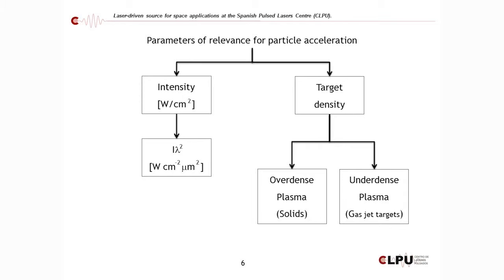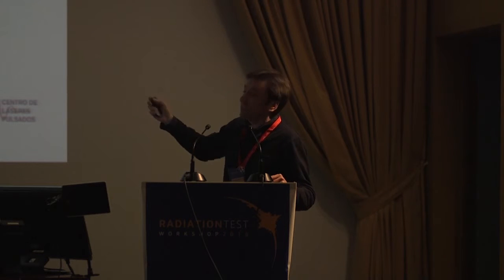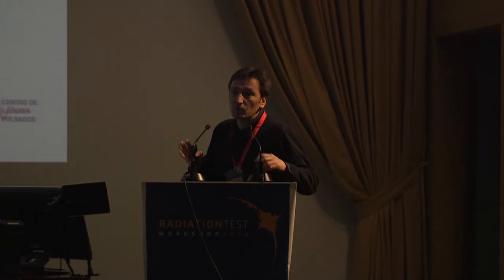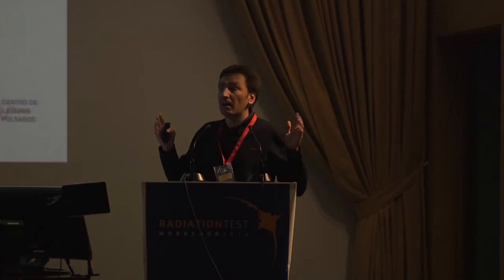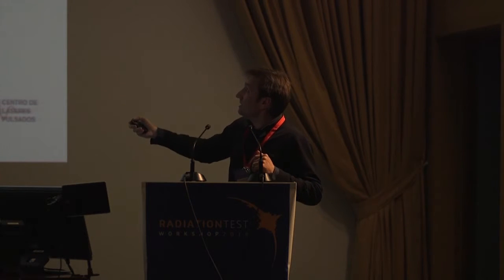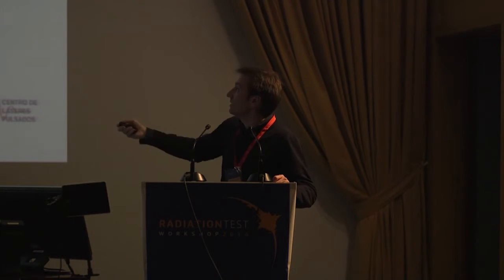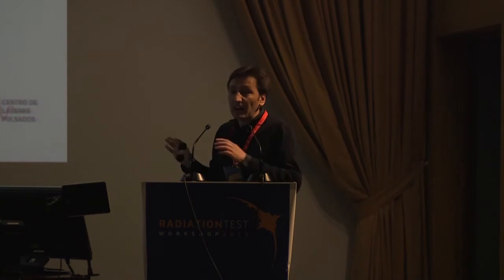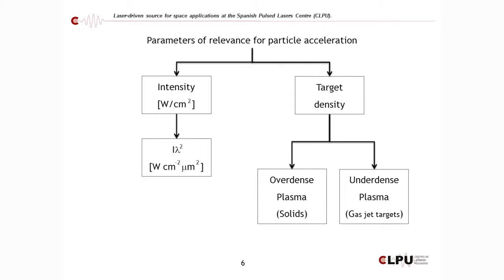The key parameters relevant for this acceleration: the first is the intensity of the laser, measured in watts per square centimeter, and also the material we use as the target. Target density is a very key question. There are two kinds of accelerators: one that works with overdense plasma and one that works with underdense plasma. We are going to concentrate only on this latter one.